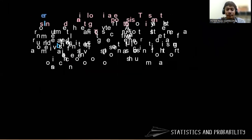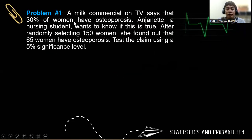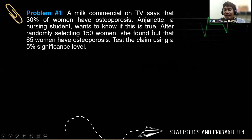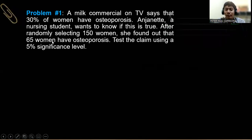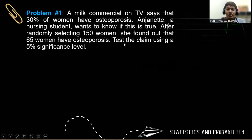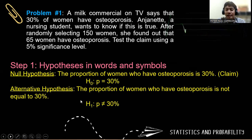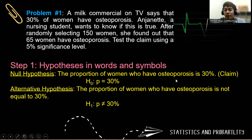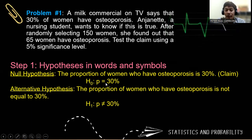Illustrative example one: A milk commercial on TV says that 30% of women have osteoporosis. Jeanette, a nursing student, wants to know if the claim is true. After randomly selecting 150 women, she found out that 65 women have osteoporosis. We have to test the claim using a 5% significance level. For step one, the claim is on the null hypothesis: the proportion of women who have osteoporosis is 30%, so H sub 0 is P equals 0.3.